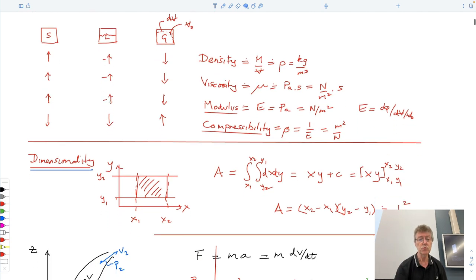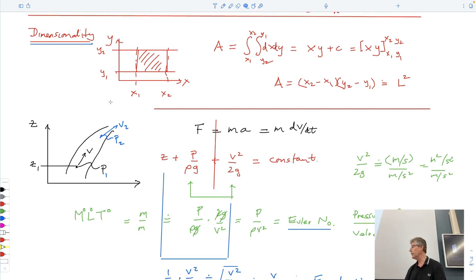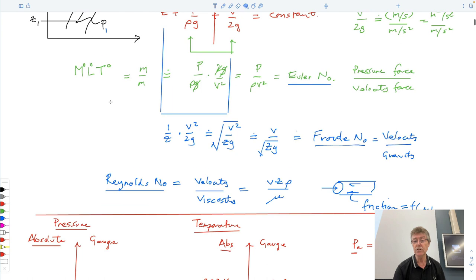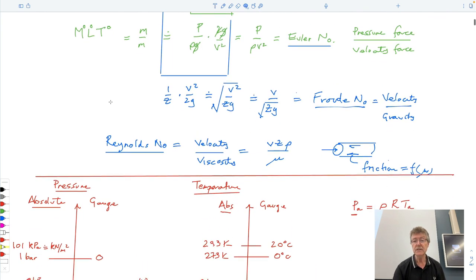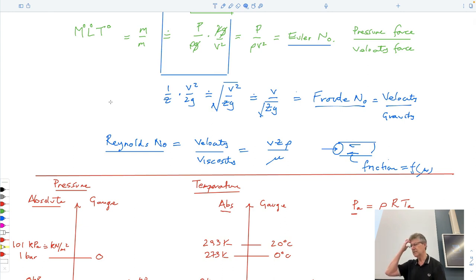We talked about dimensionality. I guess the watchword of that is that you add apples to apples. If you have an equation that has apples added to oranges, then you should question it. If you have apples added to apples, it doesn't mean it's necessarily right, but it could be right. And so, you can use that to your advantage. You can use it to get dimensions of parameters you don't know just by looking at ratios. And we can also use these dimensional units to be able to define dimensionless numbers.